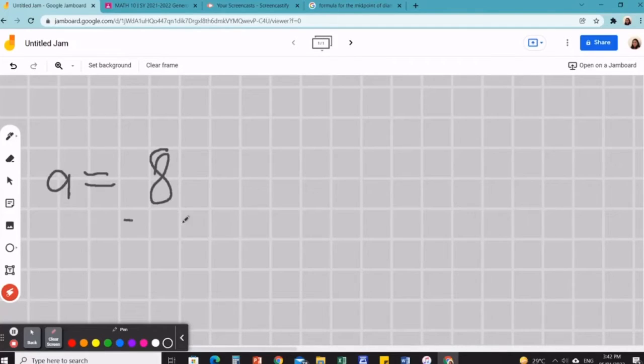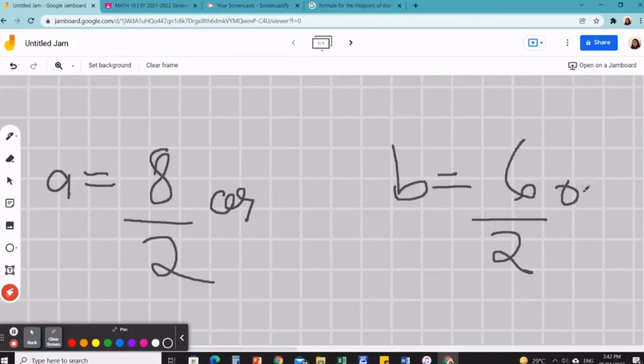And if you add 1 plus 5, it's going to give us 6 over 2. And this could actually be made to the simplest form. 8 divided by 2 is 4, and 6 divided by 2 is 3. So this is the simplest form.